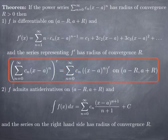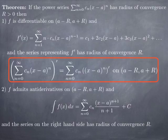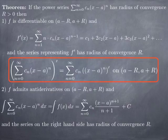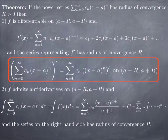Regarding antiderivatives: our function f(x) = sum from n=0 to infinity of cₙ(x−a)ⁿ has antiderivatives given by integrating term by term. The general antiderivative is the series from n=0 to infinity of cₙ·(x−a)^(n+1)/(n+1), up to a constant. That series has the same radius of convergence R as the original series. On the right-hand side we are taking the sum of cₙ times the integral of (x−a)ⁿ, since the integral of (x−a)ⁿ is (x−a)^(n+1)/(n+1), up to a constant.